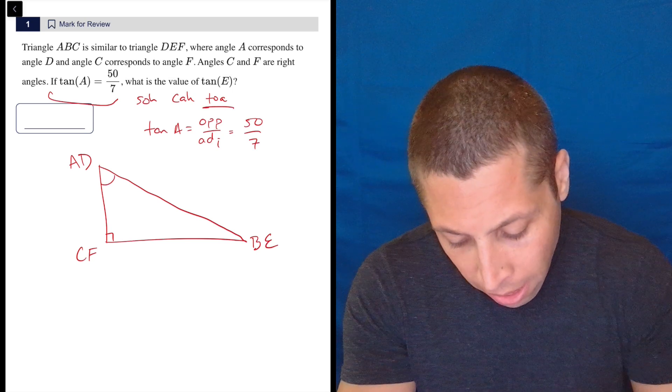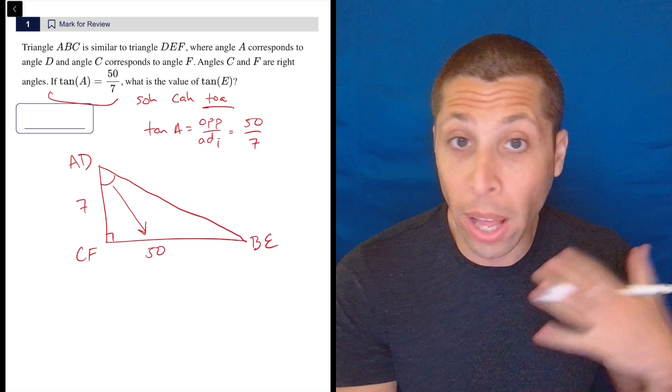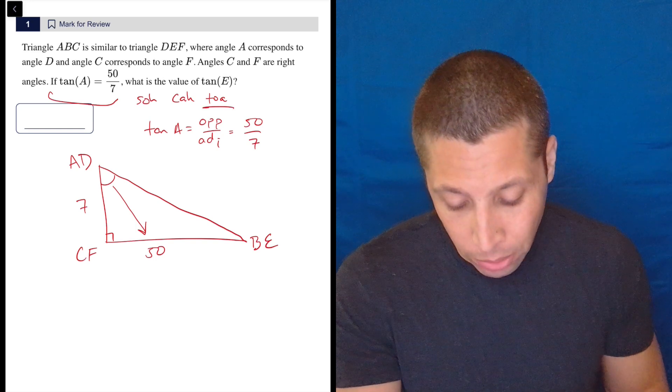The tangent of A is going to equal the opposite of A over the adjacent side, and that's 50 over 7. If we're focused here, the opposite is across, so that's the 50, and the adjacent side is right here.